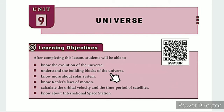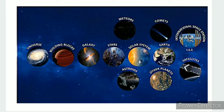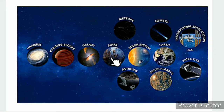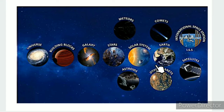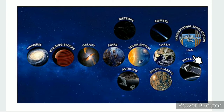This is the concept map. That is a picture of the universe — building blocks, galaxy — this is part 1. The stars form the second part. The solar system is the third part, and the fourth part covers the Earth and its natural or artificial satellite, including finding orbital velocity.